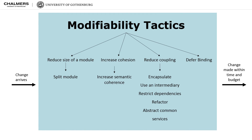First, the architect may consider reducing the size of a module. The second category is to increase cohesion. Cohesion refers to the degree that elements of a module belong together.